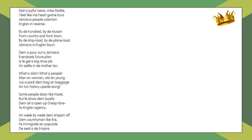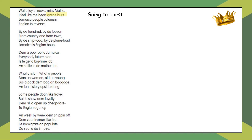Let's go through the poem and check that we understand what's going on. We begin with the narrator talking to their friend Miss Matty, saying 'What a joyful news, Miss Matty, I feel like my heart going burst.' Is that with happiness and joy? Is it because of the end of colonisation or these new opportunities? Or is it said a bit ironically — is she possibly a bit scathing or sceptical of everything that is to come?